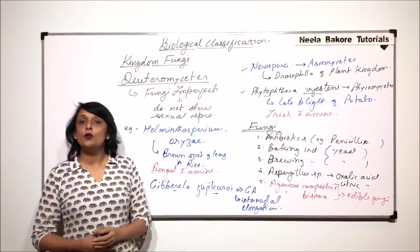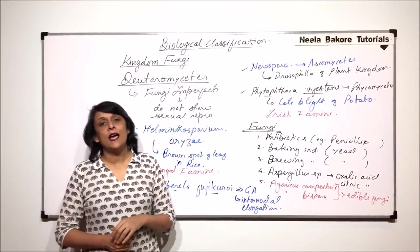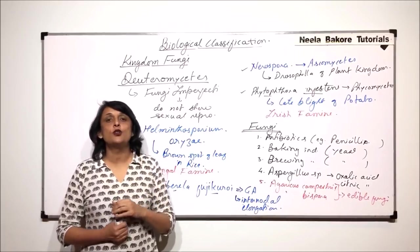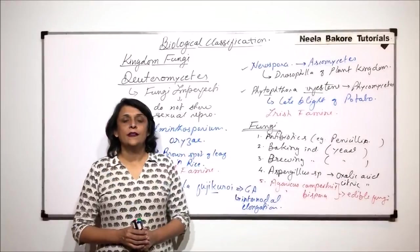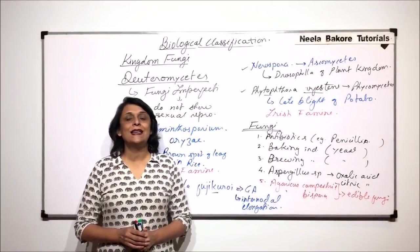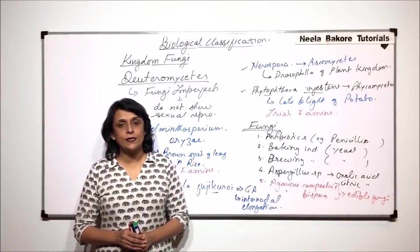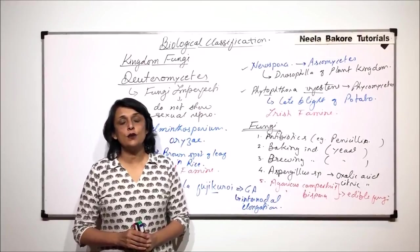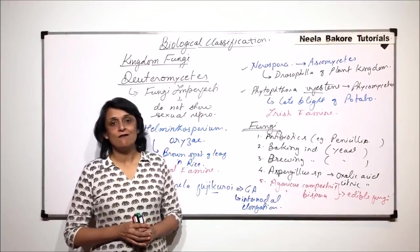And we also talked of a group which is Fungi Imperfecti because they do not show sexual reproduction. In the next part we will talk about lichens and mycorrhizae, which are the symbiotic associations where one partner is fungus.